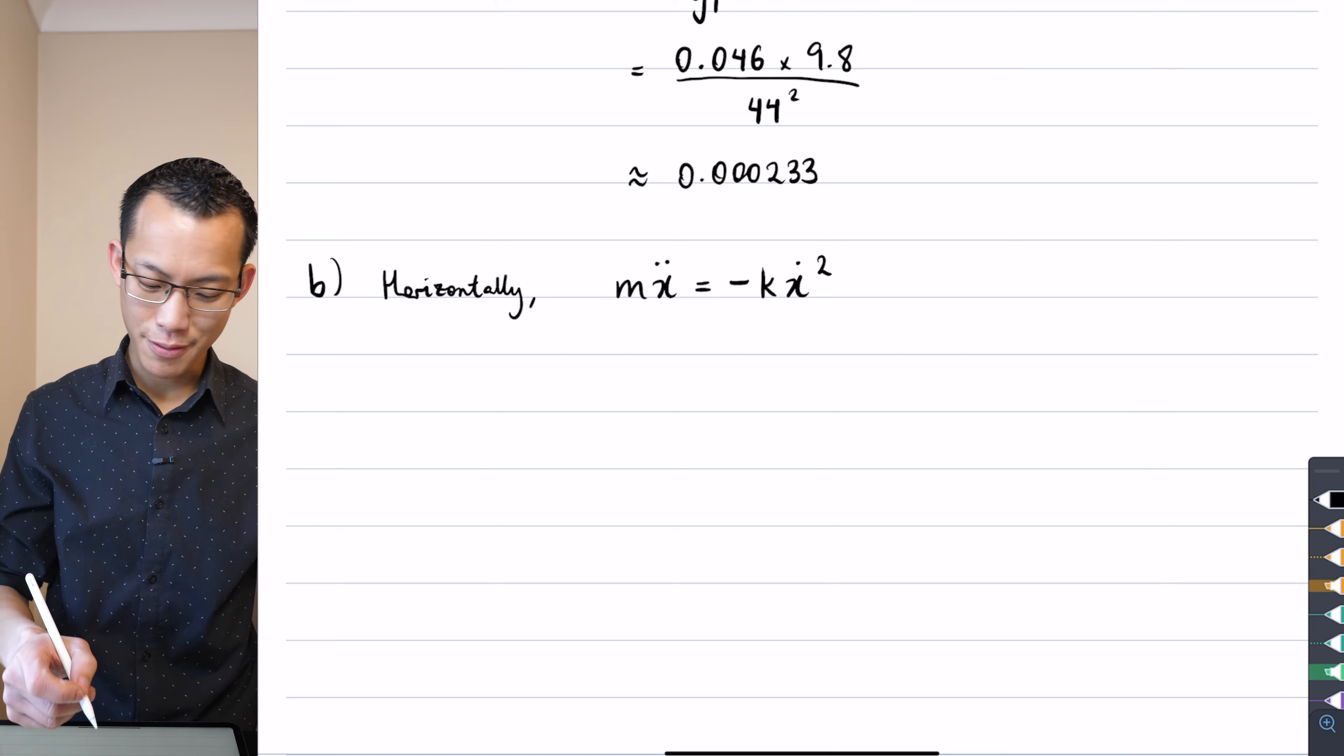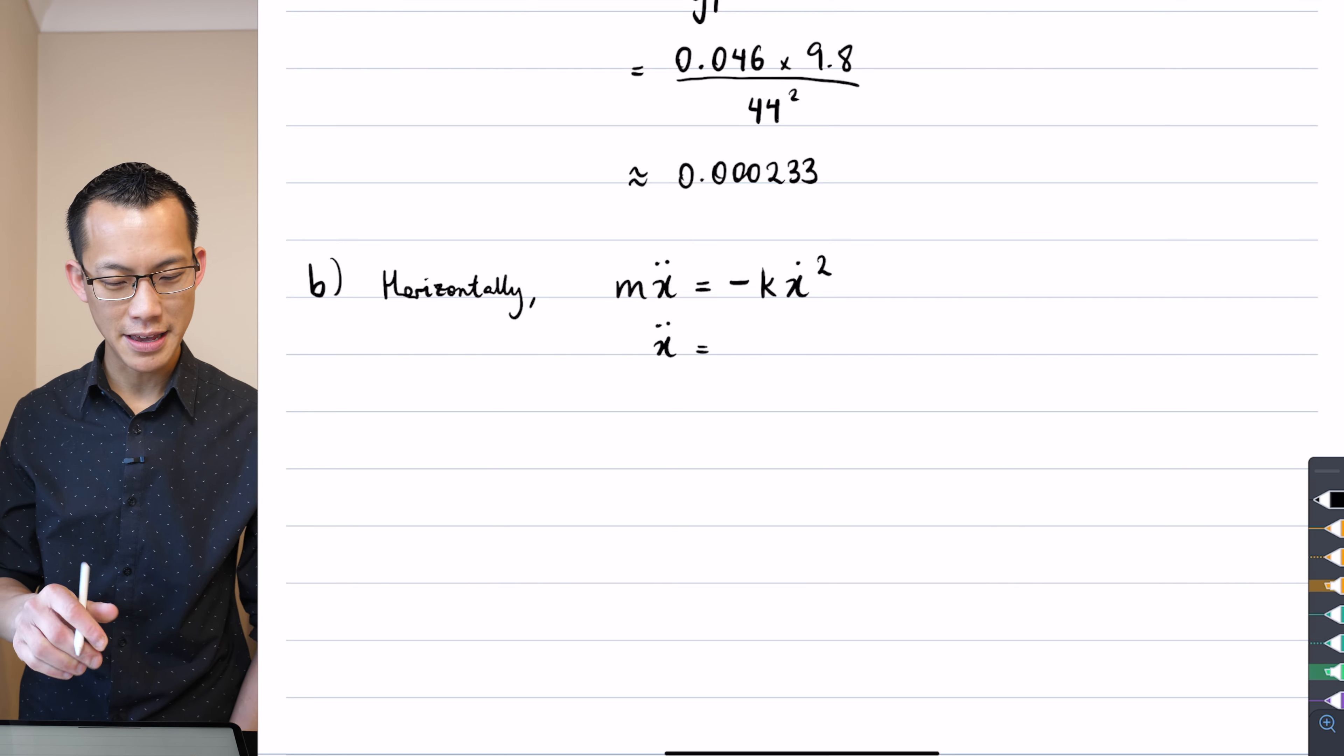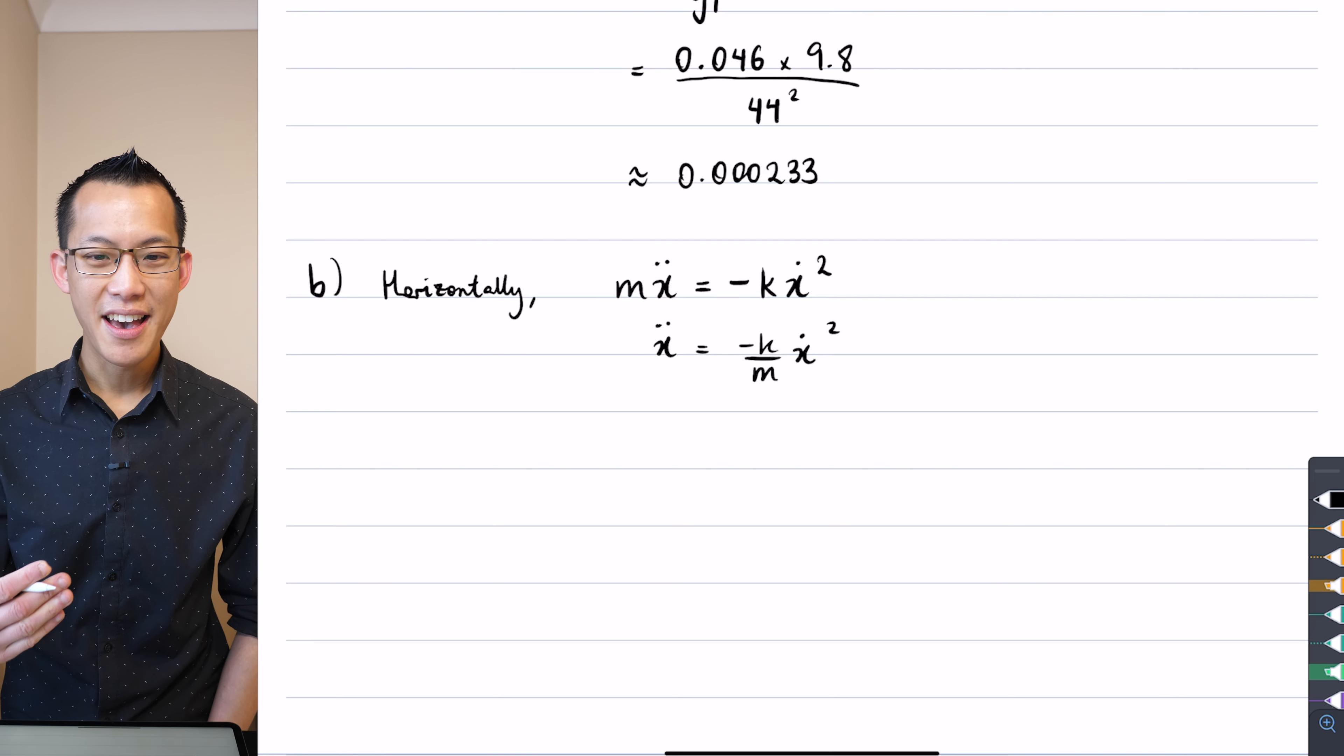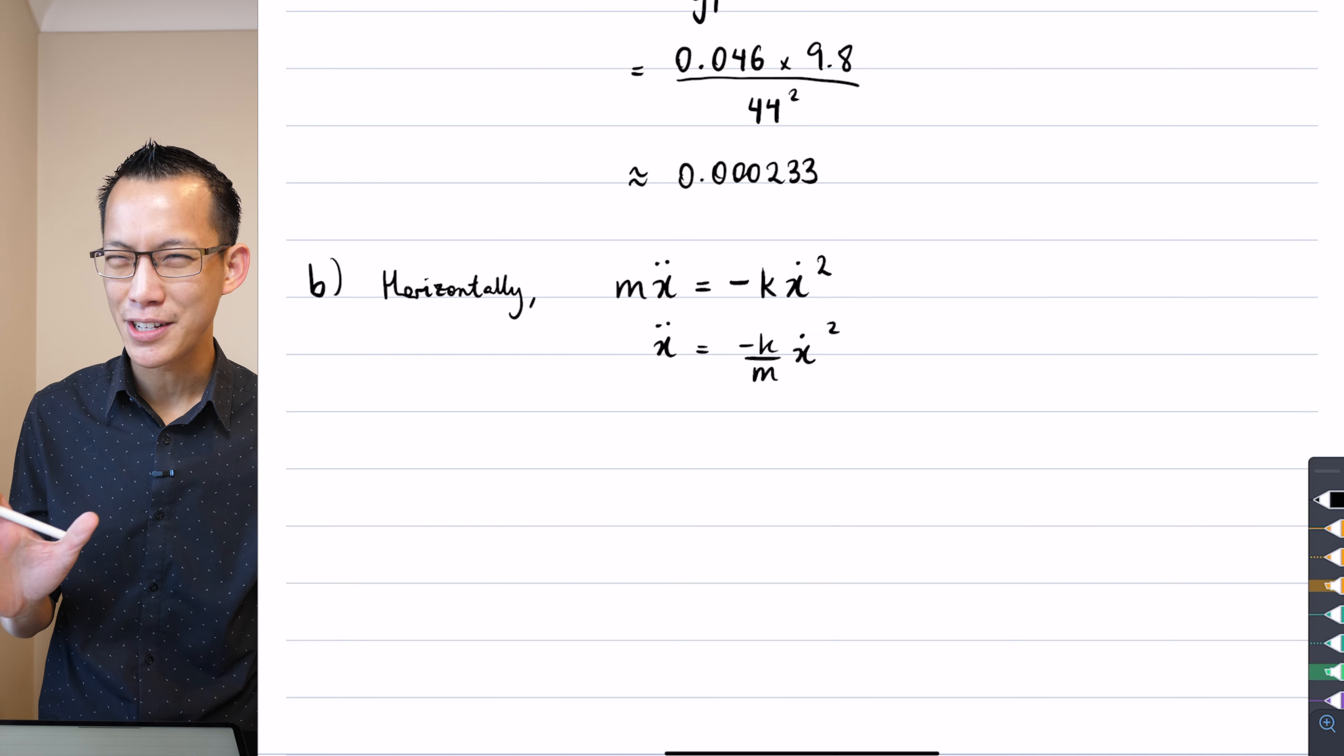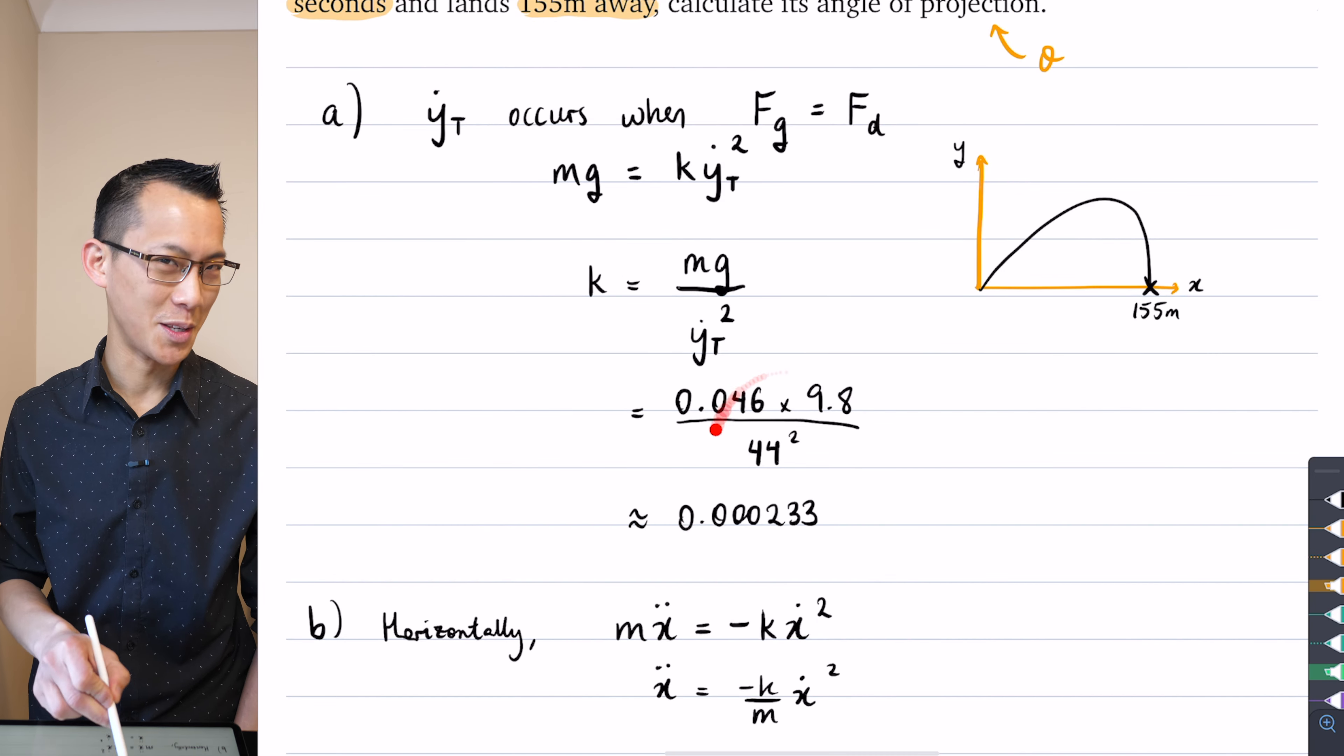So to integrate up, I've got this x double dot over here, and to integrate that I'm going to make things a bit tidier and get that mass constant over there on the right hand side. Keep in mind I do know what k is and I do know what m is, but I'm not writing it just yet because it's just going to make my working messier. I'm happy to just leave it as pronumerals because you can see up here my numbers are gross and messy.